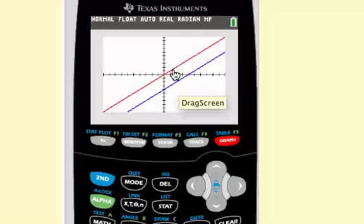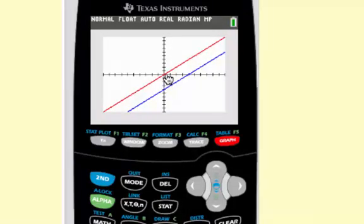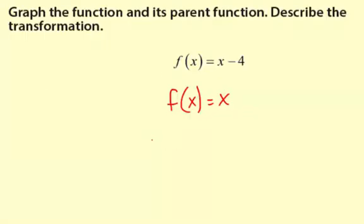Okay, so here's our parent function in red and here's our given function in blue. And the transformation, it's quite easy to see, it's one, two, three, four down. So the transformation, it's vertical translation and it's down four.